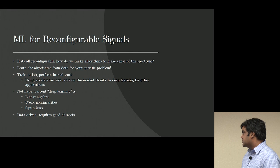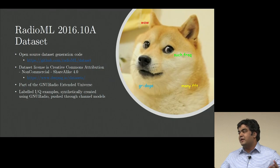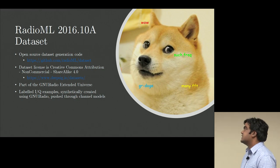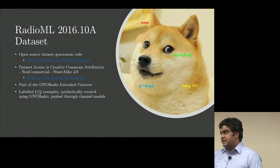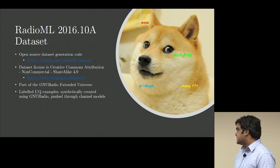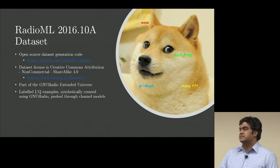That's kind of why this talk is called RadioML Redux. Several years ago, Tim O'Shea, when he was at Virginia Tech, released the RadioML dataset. It has open-source data generation code with a very permissive license — it came out of this GNU Radio community. It's a whole bunch of labeled IQ samples, synthetically created using GNU Radio and pushed through channel models and some other impairments.